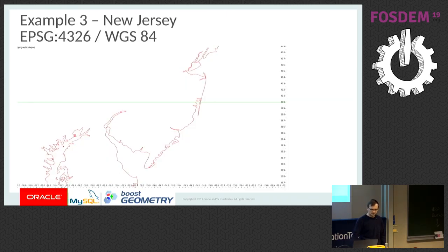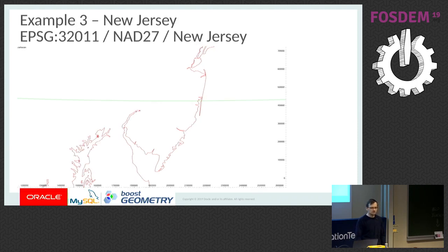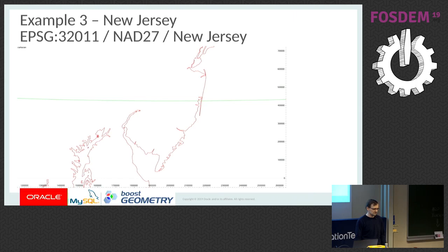The last example is New Jersey. I'm showing New Jersey because it uses the North American Datum 27, which requires grid shifting. Instead of transformation between ellipsoids using a set of numbers or an array, we are transforming between ellipsoids using grids — basically a look-up table. This is the first SRID I found in the U.S. because it's used by the U.S. and Canada in areas that are not yet deprecated.